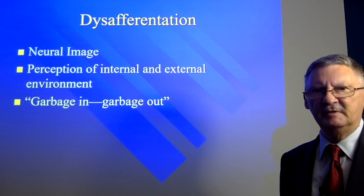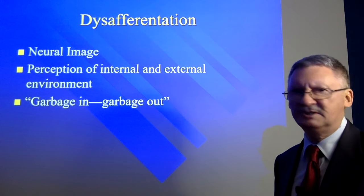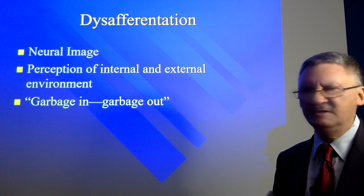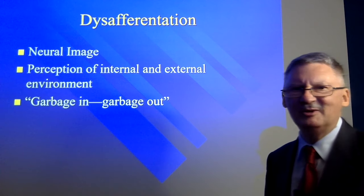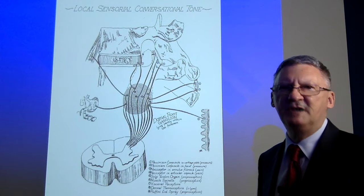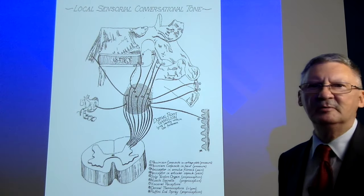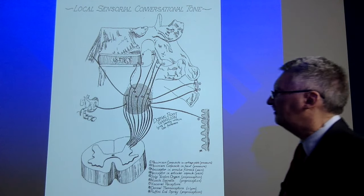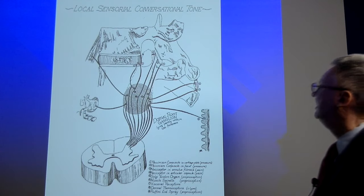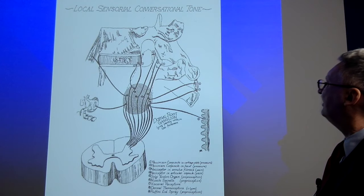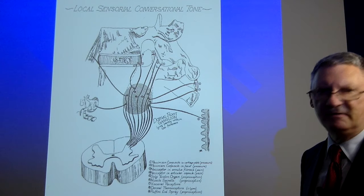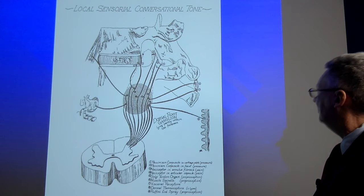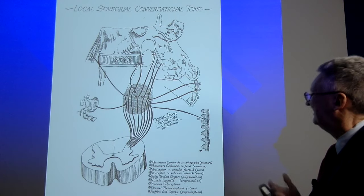Another mechanism of neural dysfunction associated with vertebral subluxation is disafferentation. Basically, this means that the body's perception of itself and the environment is compromised because of distortion of the afferent input — garbage in, garbage out. This diagram discusses what several authors termed local sensorial conversational tone: the normal flow of afferent information from the various structures in the intervertebral motion segment to the CNS. We have the ligaments of the spine, the intervertebral disc, the facet joints with a rich endowment of sensory fibers and mechanoreceptors, muscle sensory organs, and integumentary sensory organisms.